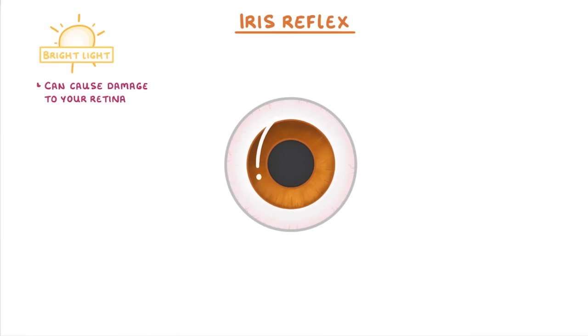So to prevent this, you have a reflex that controls the size of your pupil, making it smaller in bright light conditions so that less light gets in and damages your retina.